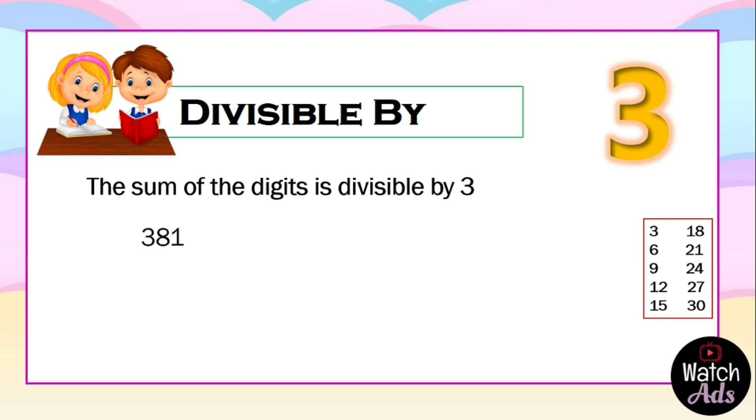Let's have an example. First we have 381. We just add 3 plus 8 plus 1, which gives us 12. And we all know that 12 is divisible by 3 because we can see it on the side note. But you can still continue. Add 1 and 2, we have 3. 3 is divisible by 3, which means 381 is divisible by 3.